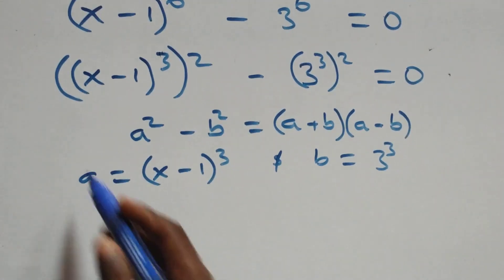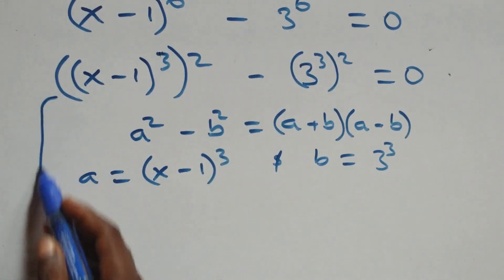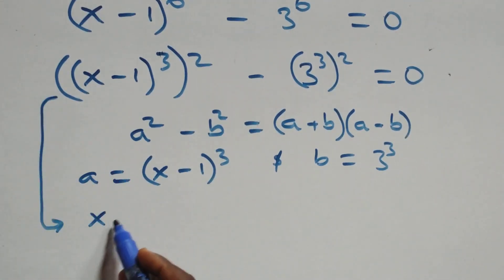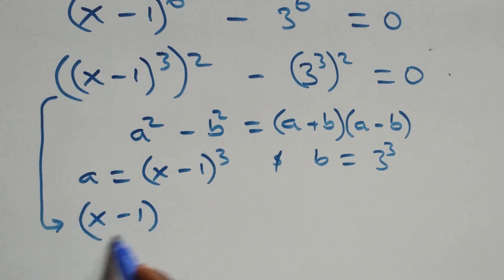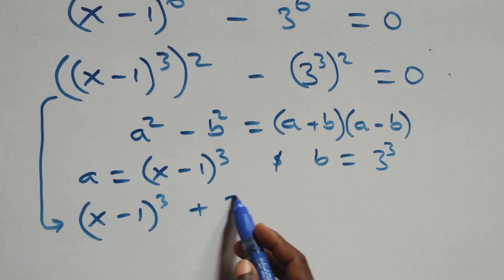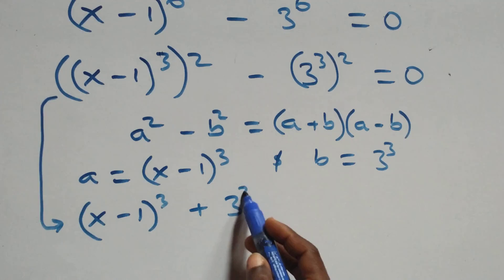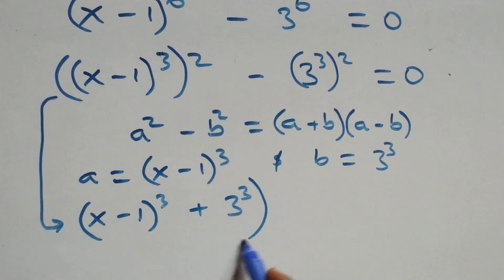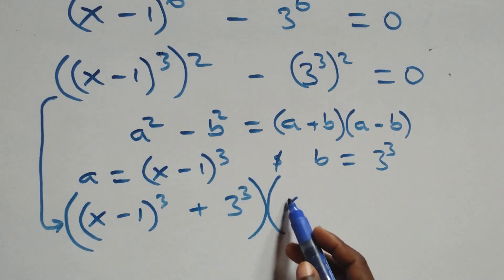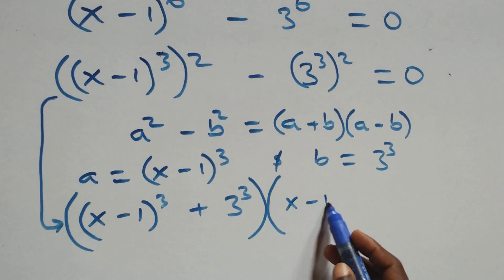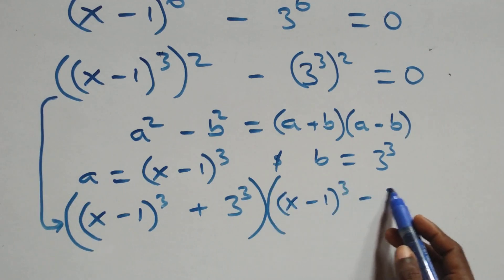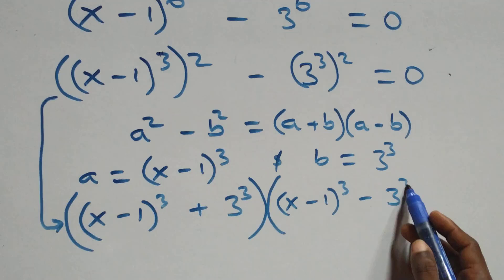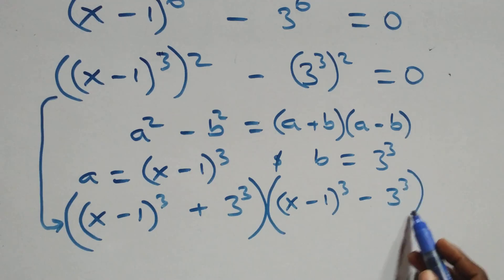So what we have becomes: (x minus 1 all raised to the power 3 plus 3 raised to the power 3) times (x minus 1 all raised to the power 3 minus 3 raised to the power 3) equals 0.